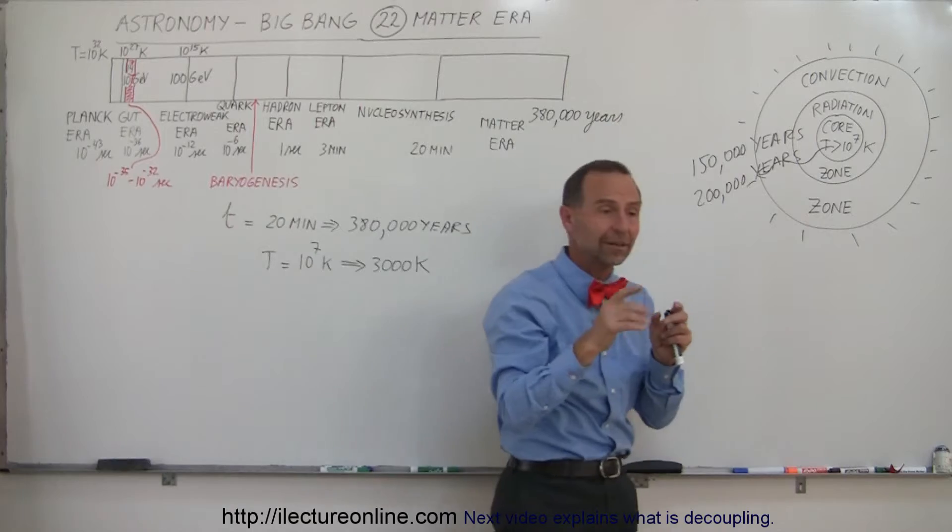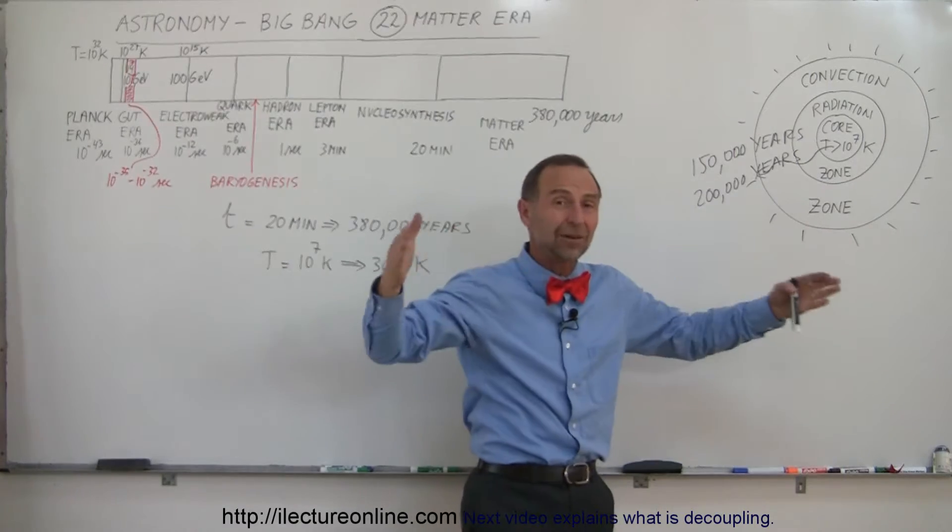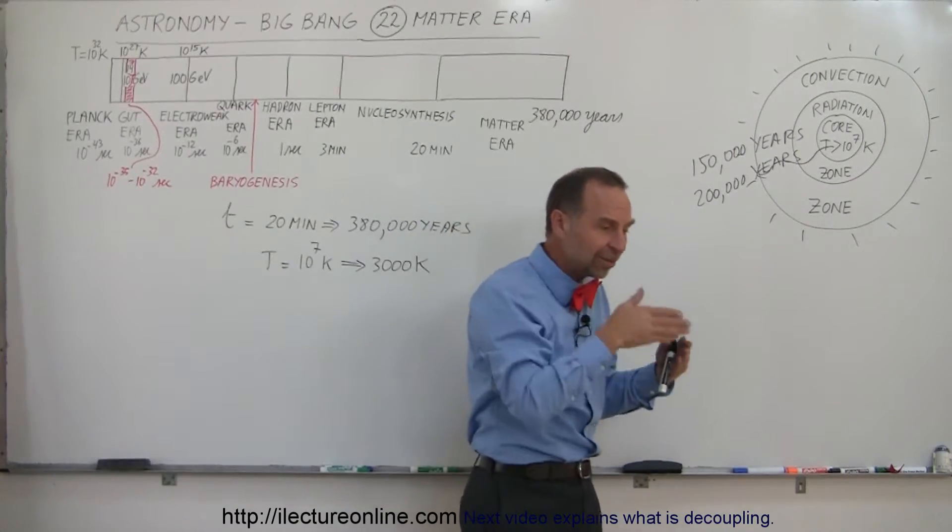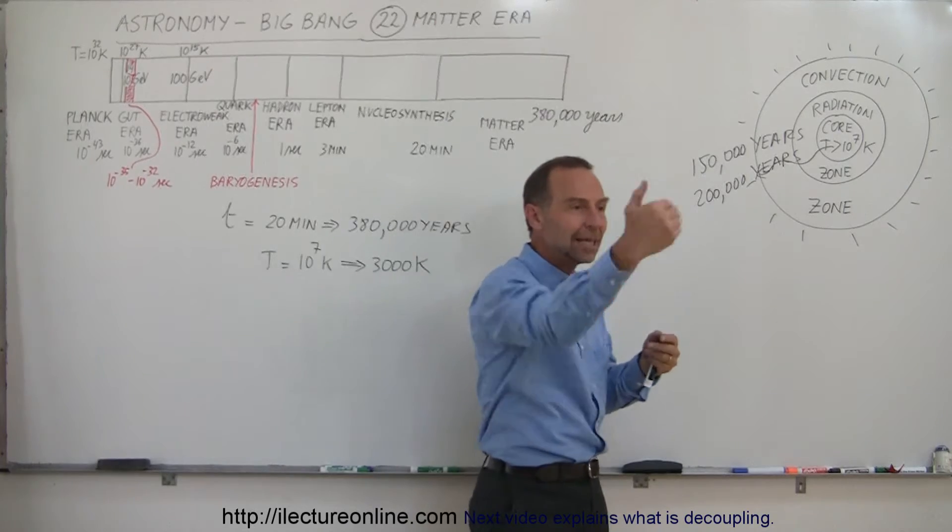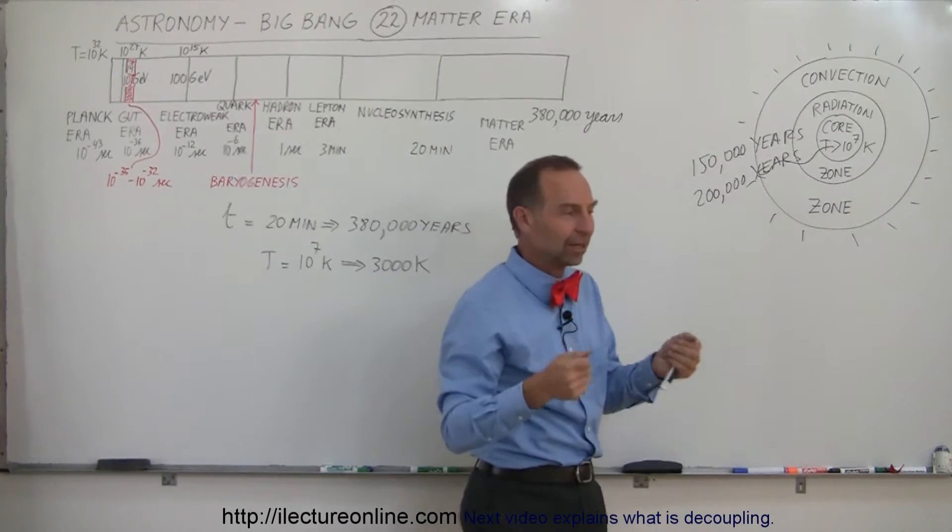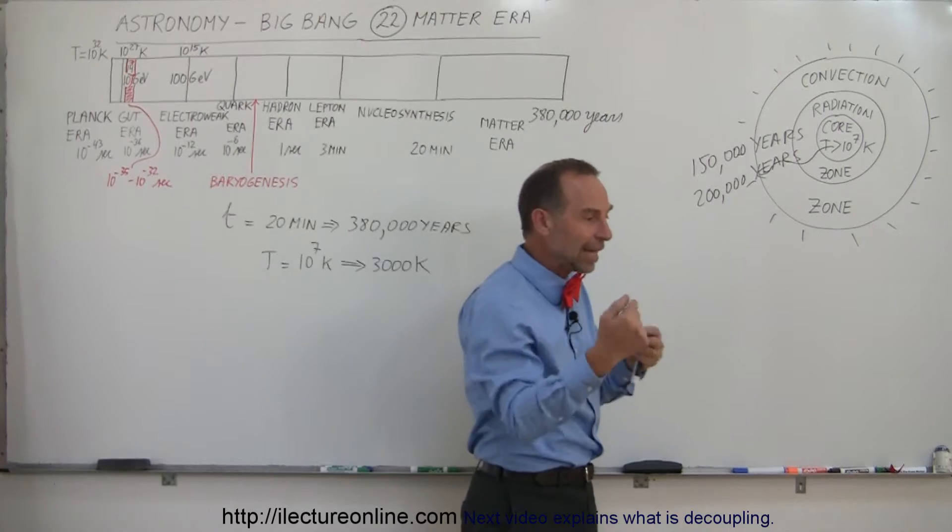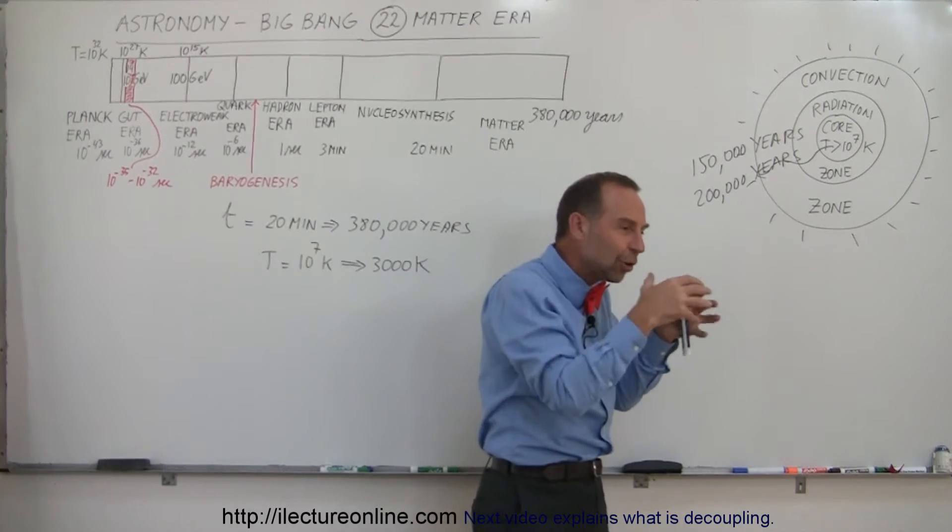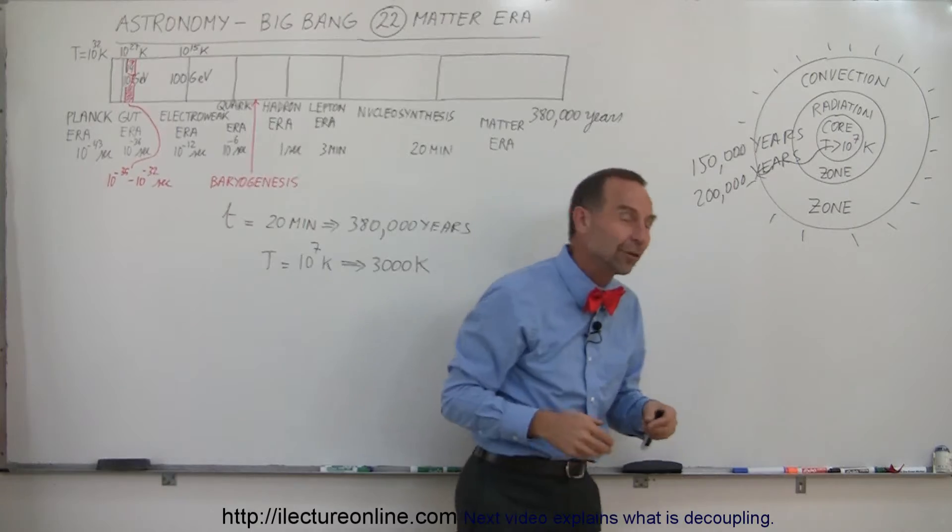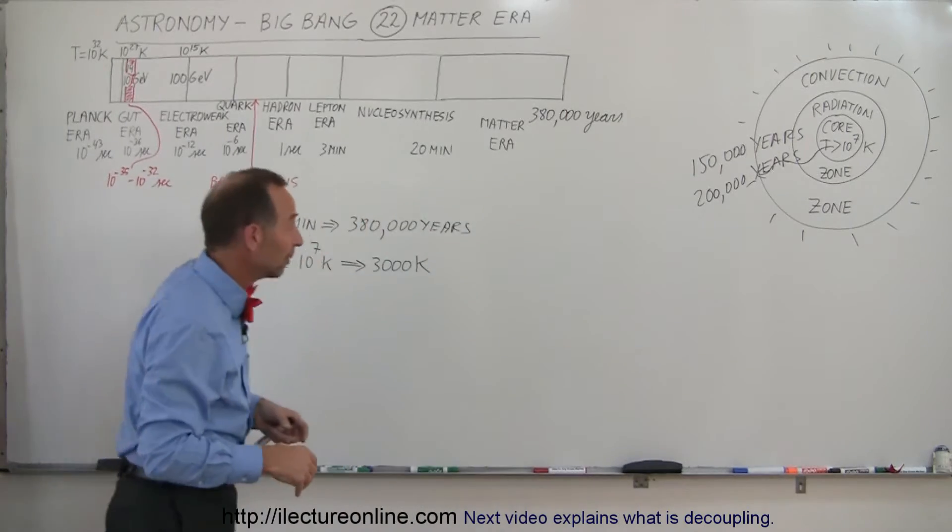But once you're inside the sun, the reason why it takes so long for these photons to reach the outer edge of the sun is because they constantly keep bumping into matter and they keep ping-ponging around. It's kind of like a ping-pong machine so to speak. It keeps ping-ponging around all over the place and it just very slowly drifts towards the outside of the universe, or I should say the outside of the star.